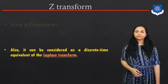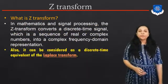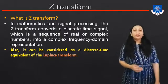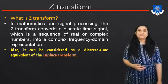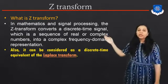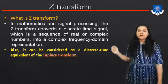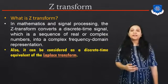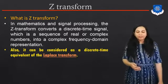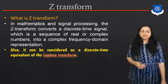First of all, what is the Z-Transform? In mathematical and signal processing, the Z-Transform converts a discrete time signal, which is a sequence of real or complex numbers, into the complex frequency domain representation. It can also be considered as a discrete time equivalent to the Laplace Transform. In this chapter, we will discretize the continuous signal using the Z-Transform.